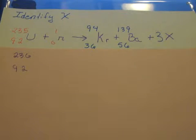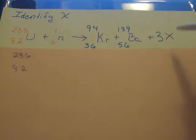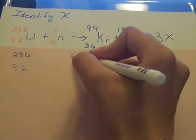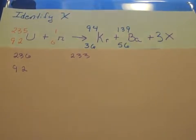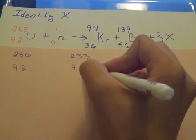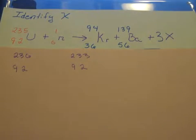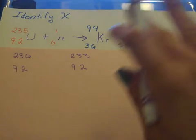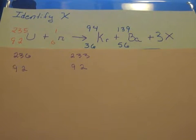Now for the right side we have 139 and 94 for now, excluding this 3x because we're going to work with that later. So that would give us 233, and then at the bottom we have 56 plus 36 which gives us 92. So now that that's already balanced and we know what we have on this side.